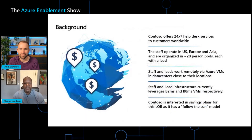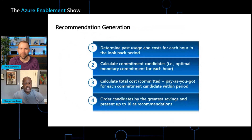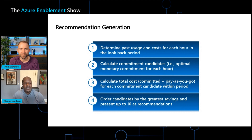Let's talk about a customer that would be a good fit for a Savings Plan. In this example, our customer Contesso runs a help desk service and because they serve globally, they leverage compute services across multiple regions over the course of a day — making them a great candidate for a Savings Plan. To generate the recommendation, we go through several steps: figure out what you spent, calculate commitment candidates (the perfect Savings Plan amount for each hour), run simulations of what you would have saved, and then from all 720 candidates we present the top 10 to the customer.